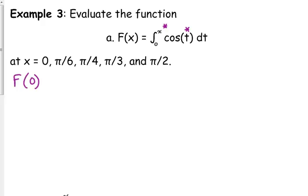So big F of 0, that means we're going to integrate from 0 to 0 of cosine of t dt. Properties of integrals, what's the value of that? Zero. If your limits are the same, you are accumulating no area, so the value of that integral is 0.